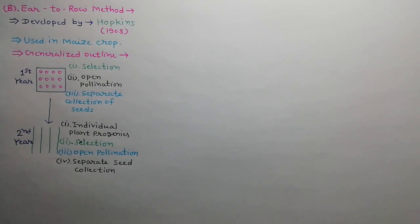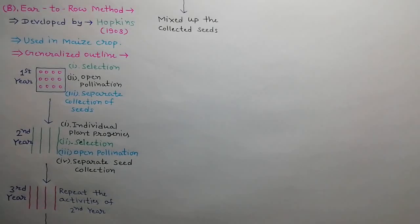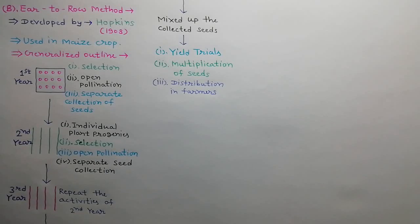In the second year, progenies are grown from the separately collected seeds, superior rows are identified, and their seeds are collected separately. In the third year, all the activities of the second year are repeated. Then the collected seeds are mixed up, yield trials are performed, seeds are multiplied, and finally distributed to farmers.